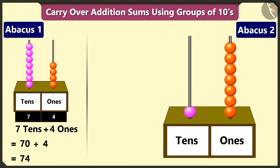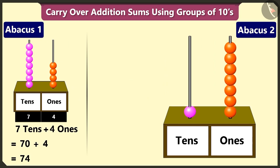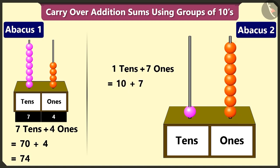Well done. And in the second abacus, in the tens box, there is one bead. This makes it one tens. In the ones box, there are seven beads. That is seven ones. So adding one tens and seven makes seventeen.